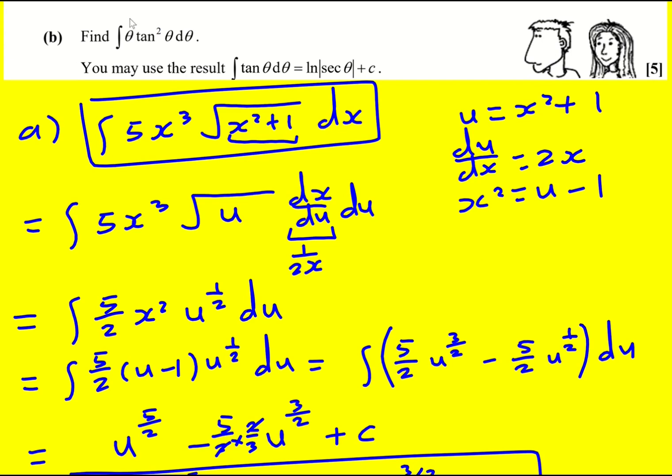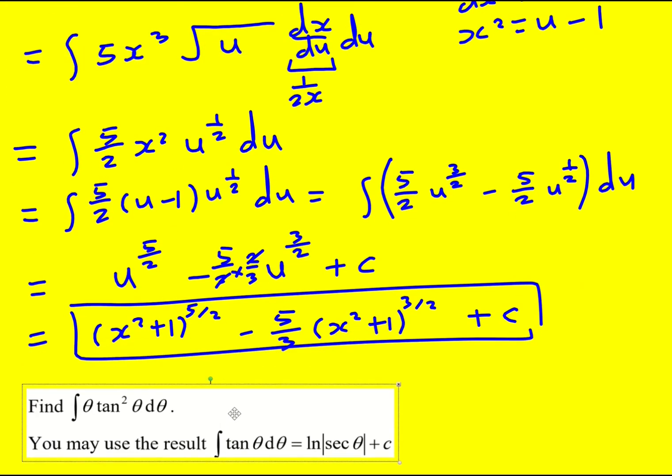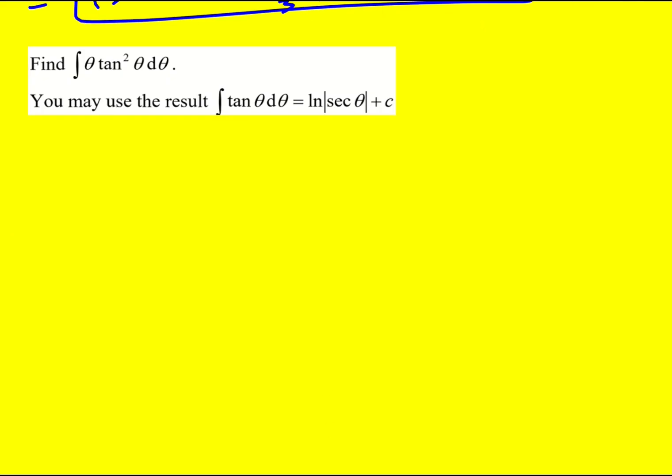So now for part b, we're asked to find this integral. And this is definitely looking like a by-parts one because we have something that we can easily differentiate, that can be our u, and then something that we can integrate. It's a little bit awkward but it's going to check out, I mean it's basically our only option.